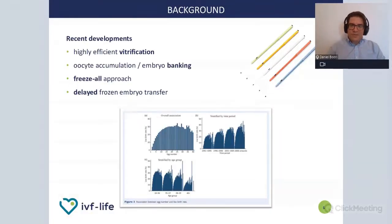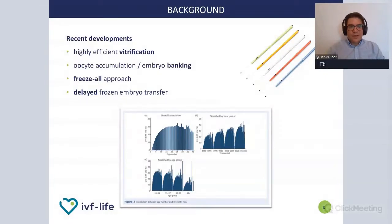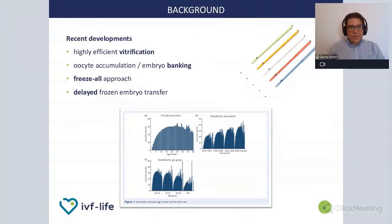Another recent development that allowed the spread of this innovative protocol is the appearance of highly efficient oocyte and embryo vitrification. Since the early 2000s, this method was developed and became very efficient, leading to the strategy of oocyte and embryo accumulation or banking, which in many advanced clinics is now a standard approach. The number of so-called freeze-all cycles — when embryos are not transferred in a fresh cycle but rather frozen for embryo banking purposes or for pre-implantation genetic testing — is more frequent.